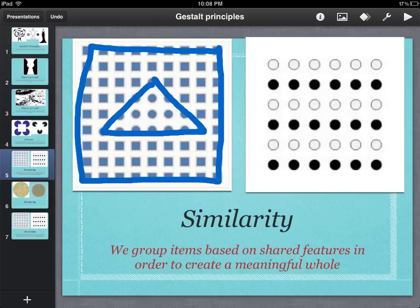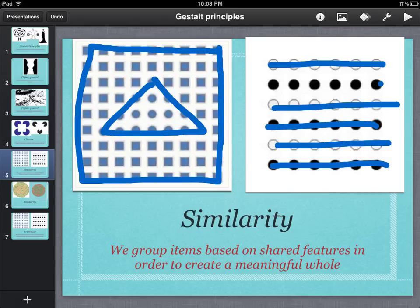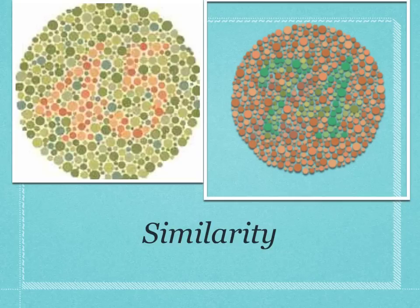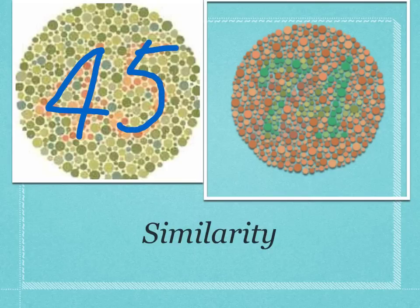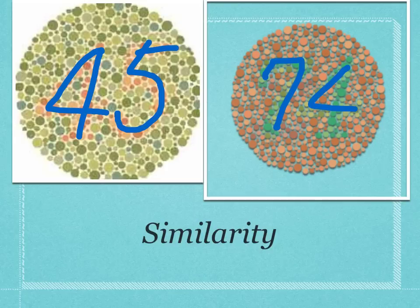The item on the right we are organising into a meaningful whole based on the shared feature of colour — white or black. So rather than just saying we have 36 dots, you say we have three rows of white dots and three rows of black dots. We can also test for colour blindness for that part of the population that has issues with their photoreceptors in the form of their cones. If you can perceive the 45 on the left, you are doing so by organising it into a meaningful whole based on shared colour. Likewise for the 74 on the right.